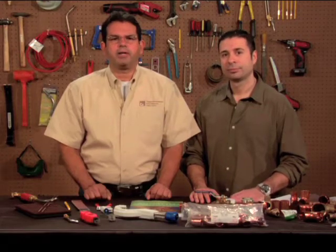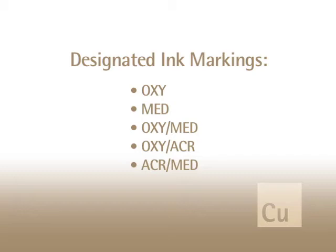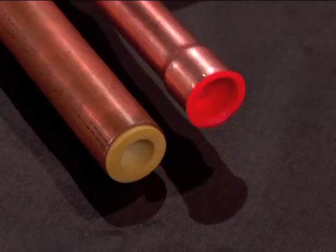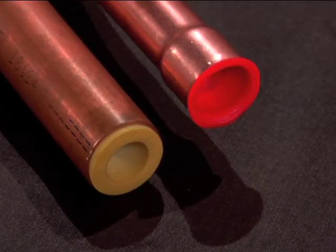These will include an ink marking in any of the following five ways: OXY, MED, OXY/MED, OXY/ACR, or ACR/MED, signifying that it is for medical gas use. The tube is clean and capped at the factory to protect it from any contamination. For systems operating at pressures over 185 PSIG or more than three inches nominal size, type K copper tube must be used.